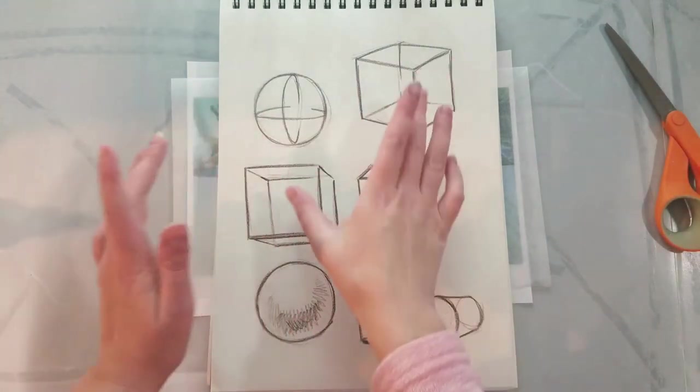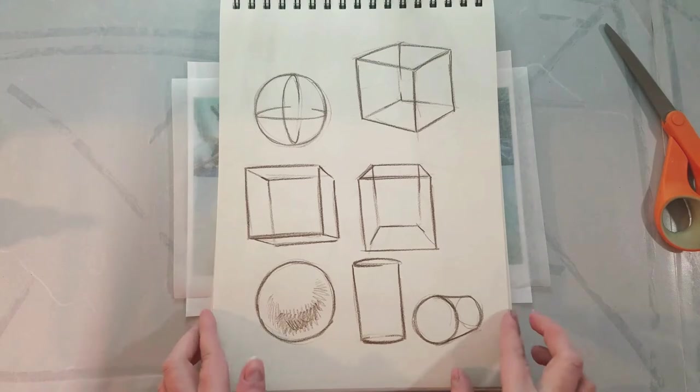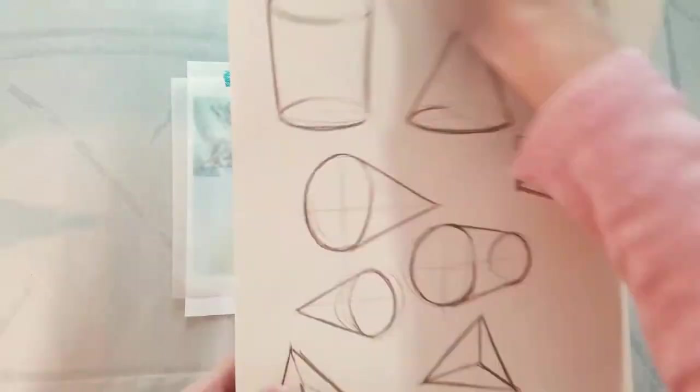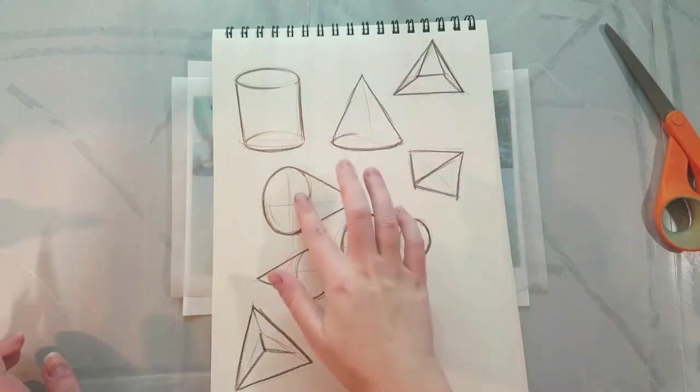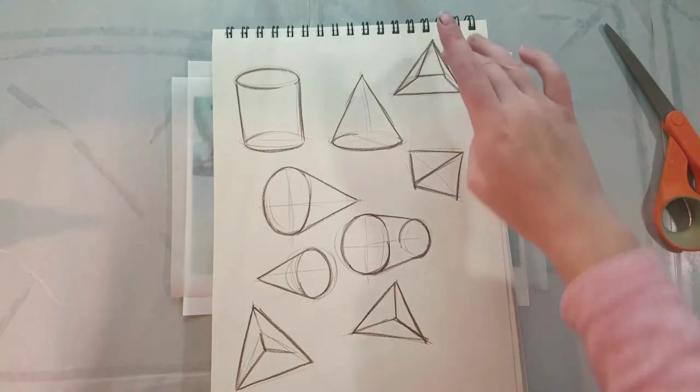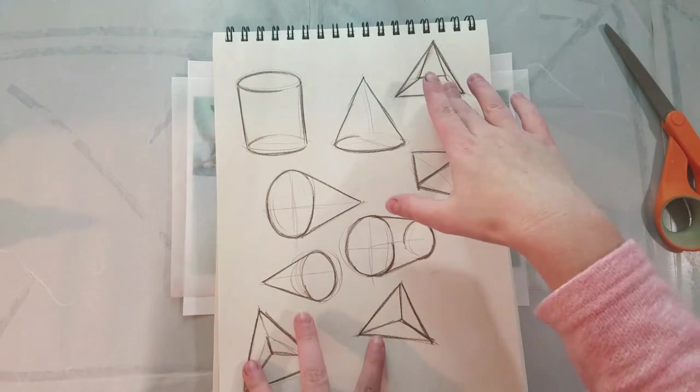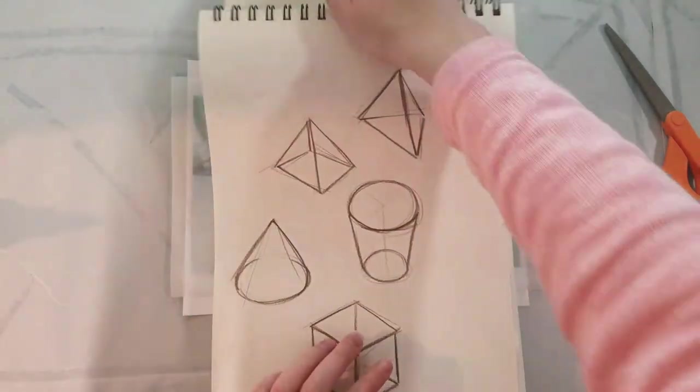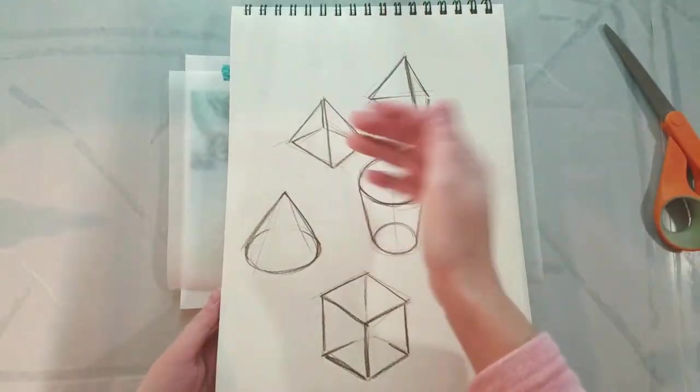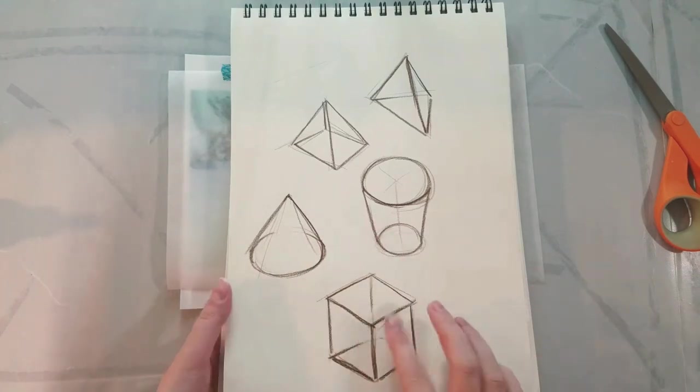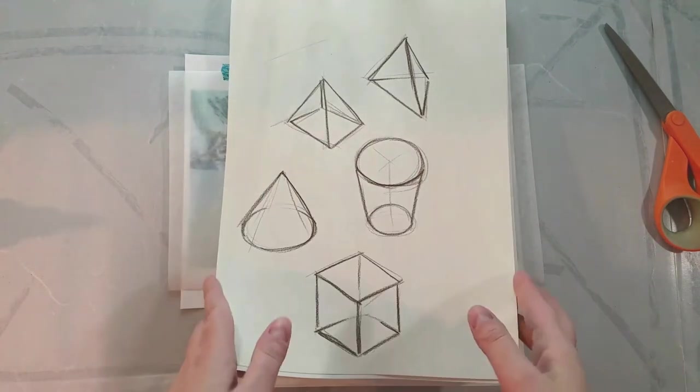But we have here some basic 3D volumetric forms. We have a couple of spheres. We have a few views of cubes. We have a couple of cylinders. We have some cones. We have some pyramids. Three-sided triangular pyramids. We have a four-sided pyramid. We have a couple different views of cone and cylinder. And then we have another cube.